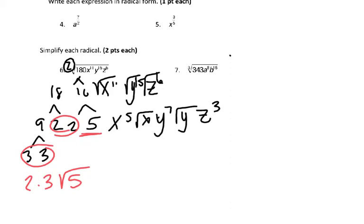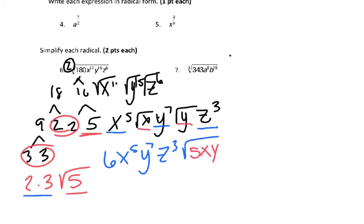And then we just combine everything that's outside. 2 times 3 is 6, x to the 5th, y to the 7th, z to the 3rd. And inside the radical we're left with 5, x and y. And that was your answer.